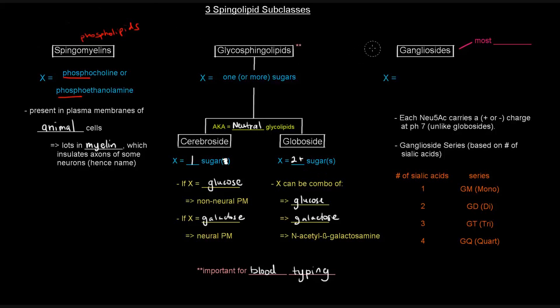Now, on to the next class is gangliosides. And these are actually the most complex of the bunch. X is an oligosaccharide with at least, at least is in all caps there, one N-acetyl-neuraminic acid, which is abbreviated as Neu5Ac, which is a sialic acid. What does that even mean? An oligosaccharide basically means you have multiple sugars attached in a link. And there's at least one of these sialic acids.